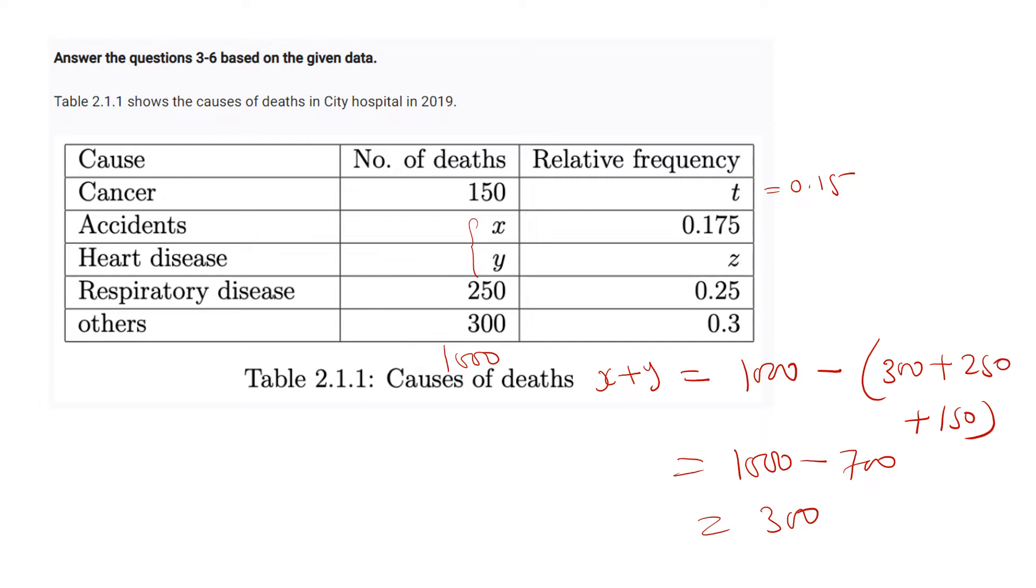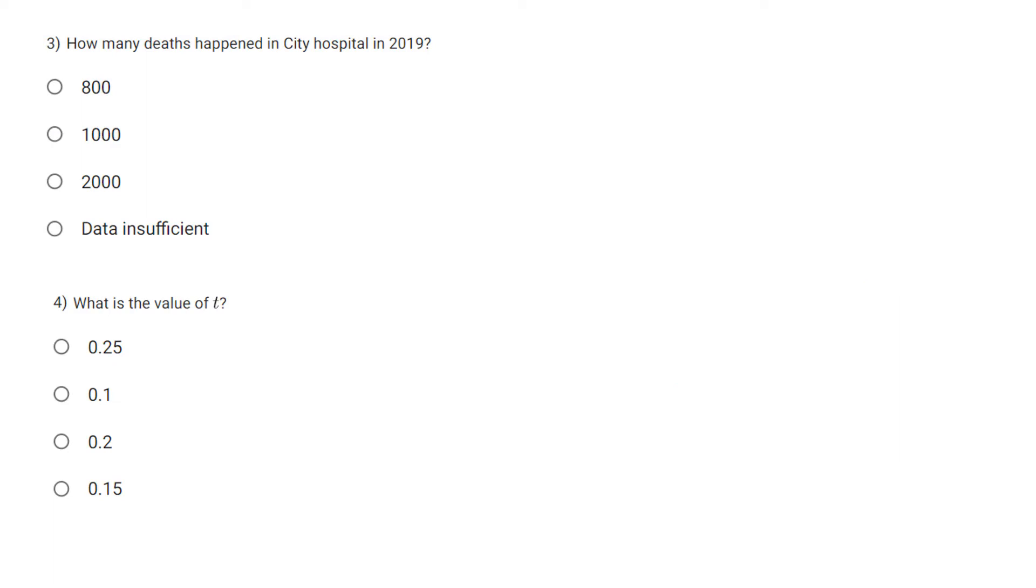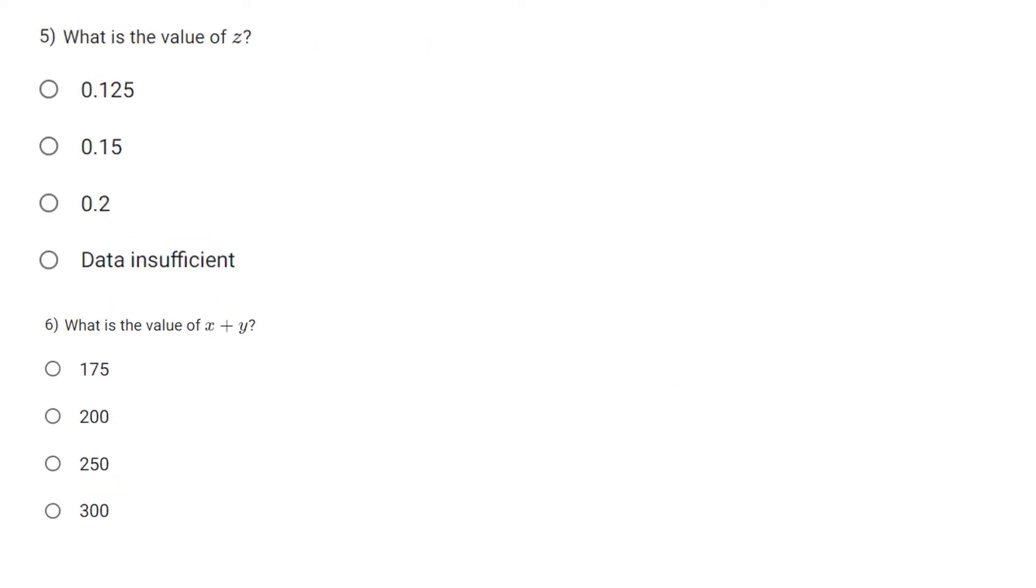We can calculate the relative frequency. X plus Y is 300 upon 1000 and it is 0.3. So one is 0.175, the other is 0.3 minus 0.175, it will be 0.125.